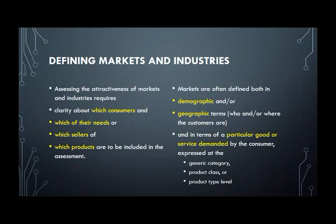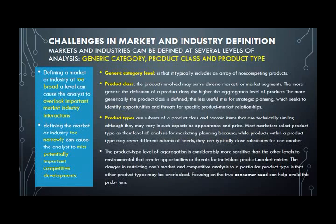Markets are often defined in both demographic and geographic terms. Geographic refers to where the customers are, while demographic refers to who is buying. In terms of the particular good or service demanded, you categorize into three groups: the generic category, product class, and product type levels. These are the three levels used to define the demands or goods for different consumers.